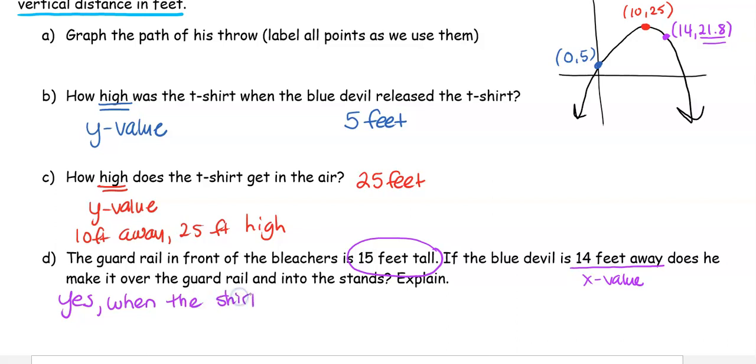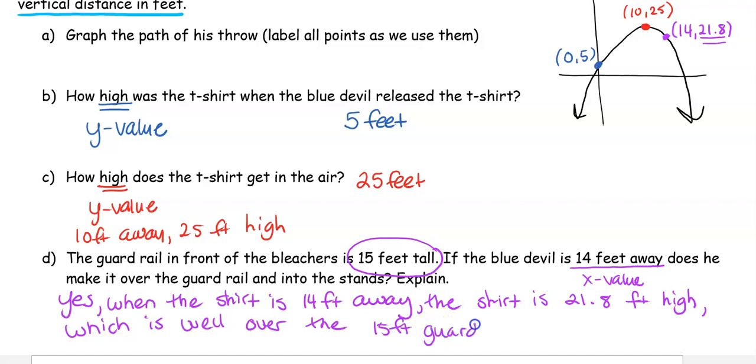I'm going to say: Yes, when the shirt is 14 feet away, the shirt is 21.8 feet high, which is well over the 15 foot guard rail. What we're doing is comparing the 15 feet with the 21 feet. I want to make sure you're comparing the correct numbers, so always tell me which numbers you compared when determining your answers.